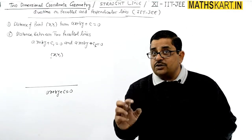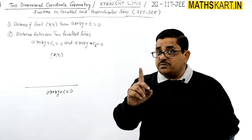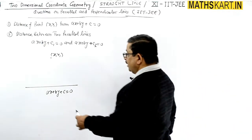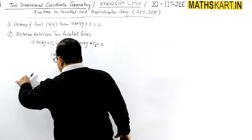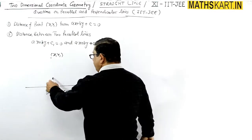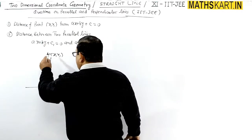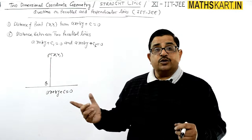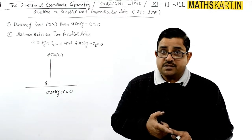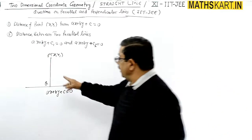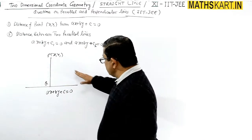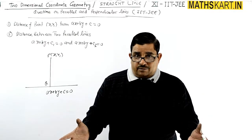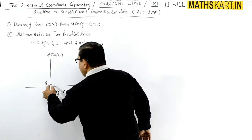It is important to understand that when we talk about the distance of a point from a line, this means the perpendicular distance. If not, there are many possibilities — an infinite number of lines can be drawn — so we cannot work with that. Hence, it is always the perpendicular distance.